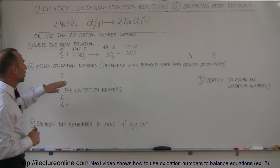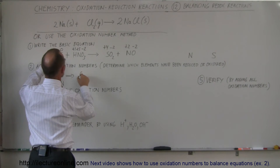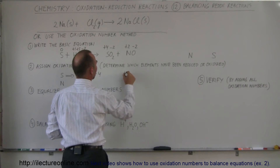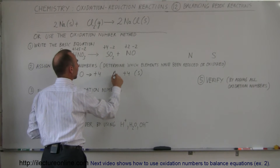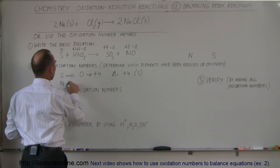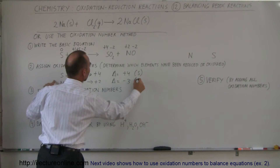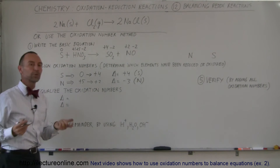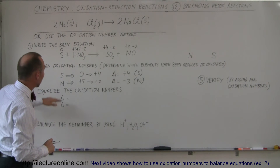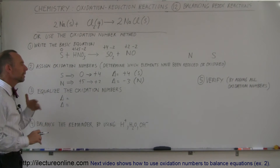The next step is to equalize the oxidation numbers. Sulfur went from zero to plus four — it was oxidized — so the delta equals plus four. Nitrogen went from plus five to plus two — that was reduced — so the delta is minus three. You determine how much of a change occurred: sulfur had an oxidation increase of plus four, and nitrogen had an oxidation decrease, or reduction, of minus three.